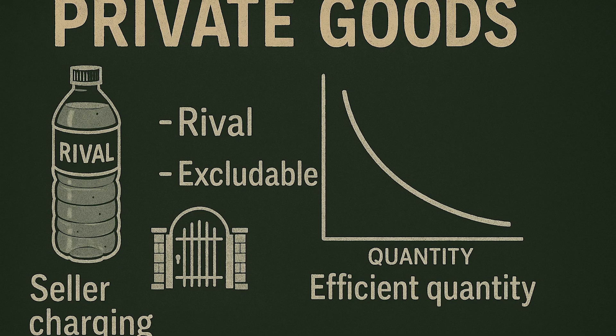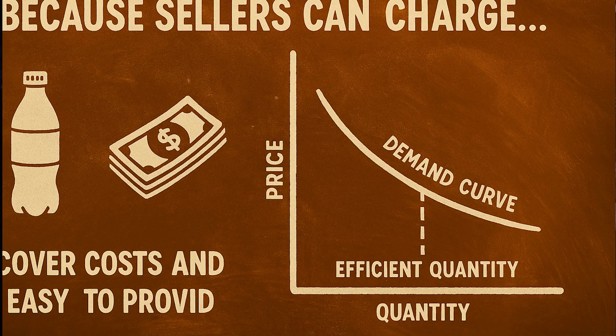Private versus public — start with the basics. Most things we buy are private goods with two key features: rival, meaning if I drink a bottle of water you can't drink that same bottle; and excludable, meaning the seller can keep non-payers out. Because sellers can charge, they can cover costs and earn profit.